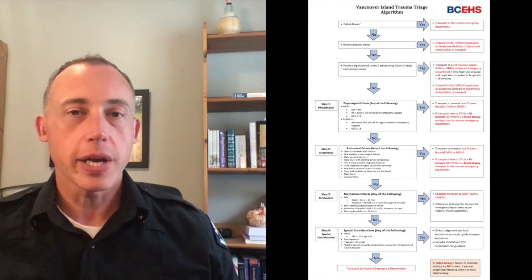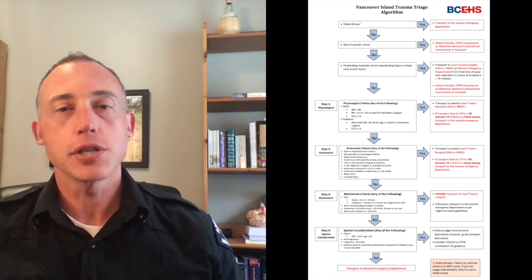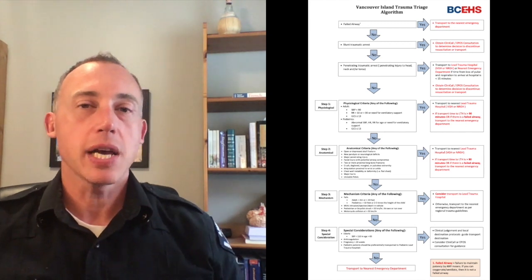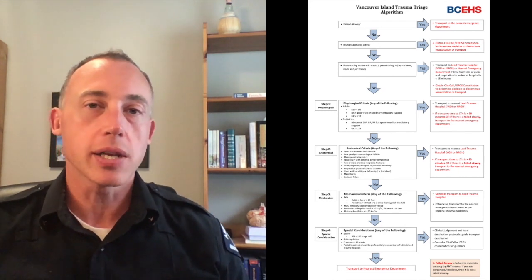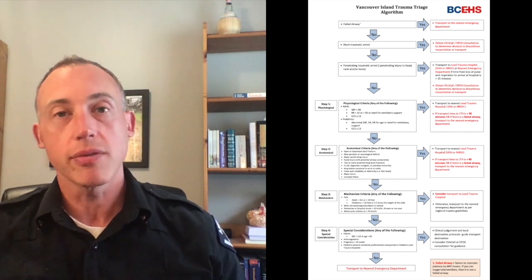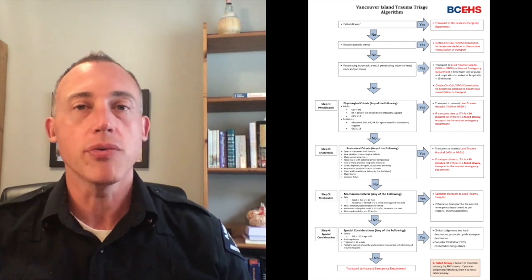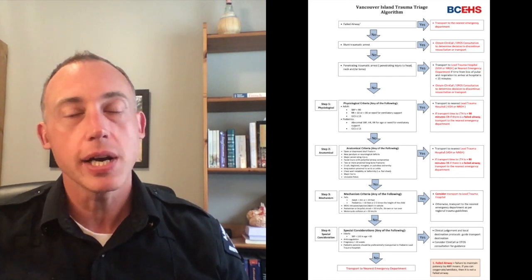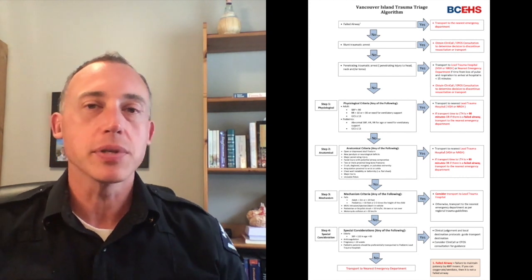After cardiac arrest, the algorithm gets into the physiological, anatomical, and mechanism components we covered in Part 1. Under physiological criteria: a GCS of 13 or less, hypotension with systolic less than 90, a ventilatory rate less than 10 or greater than 30, or needing ventilatory support — those patients need to go to a lead trauma hospital. The guideline says go for it if the lead trauma hospital is accessible within 90 minutes; if not, you would go to your closest hospital.